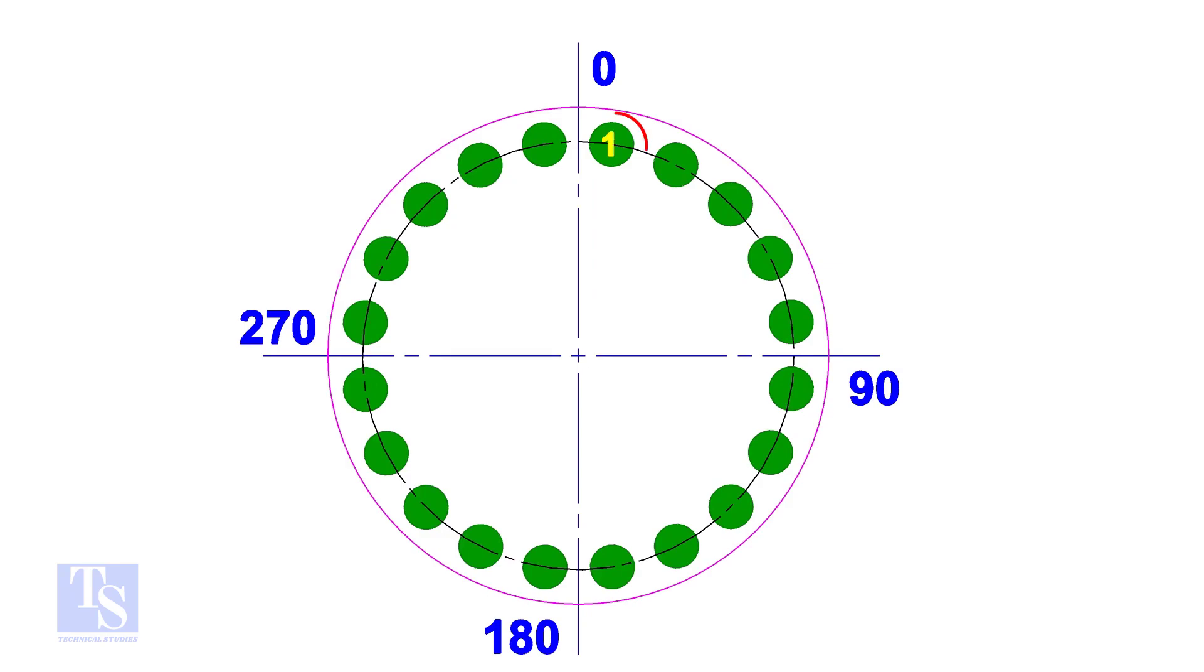Start tightening the first bolt from zero degrees, but only twenty percent of the torque value. Tighten the bolt next to one hundred and eighty degrees. That is exactly one hundred and eighty degrees opposite to the first bolt. Tighten the bolt next to ninety degrees, that is actually ninety degrees to the previous bolt.